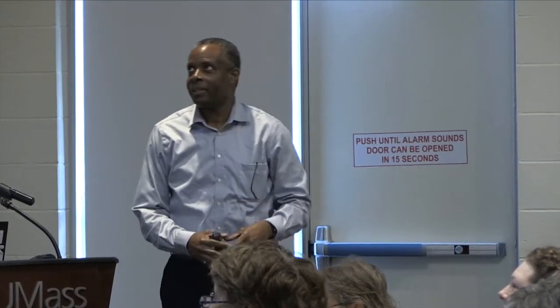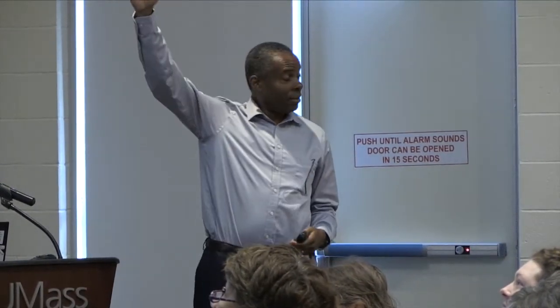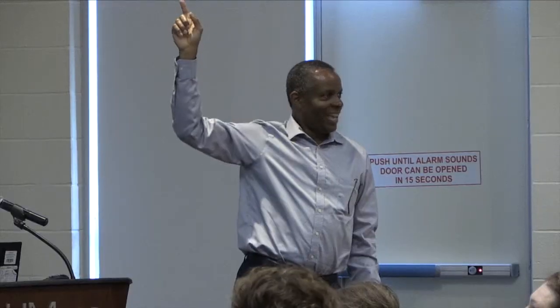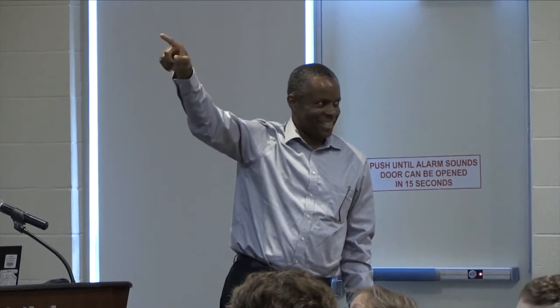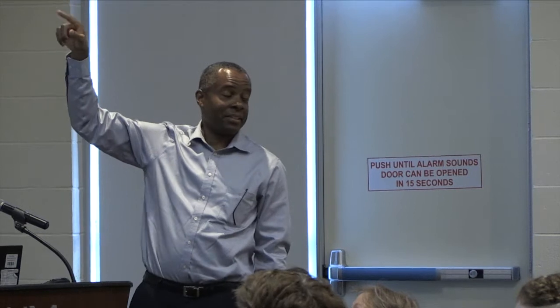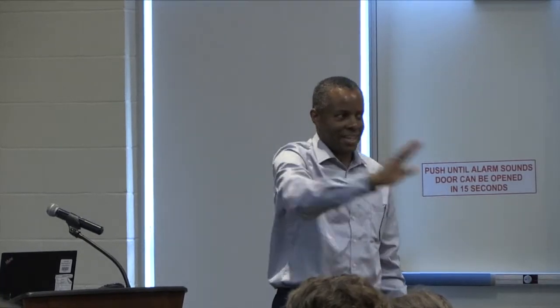We'll talk a little bit about the history of engineering and where civil environmental engineering comes from. Initially, it was military engineers and civilian engineers. The civilian engineers were the ones who did buildings and roads and aqueducts — not trains, that's another one that got stolen. Military engineers worked on the weaponry and the battlements. Then we had the scientific revolution, industrial revolution.